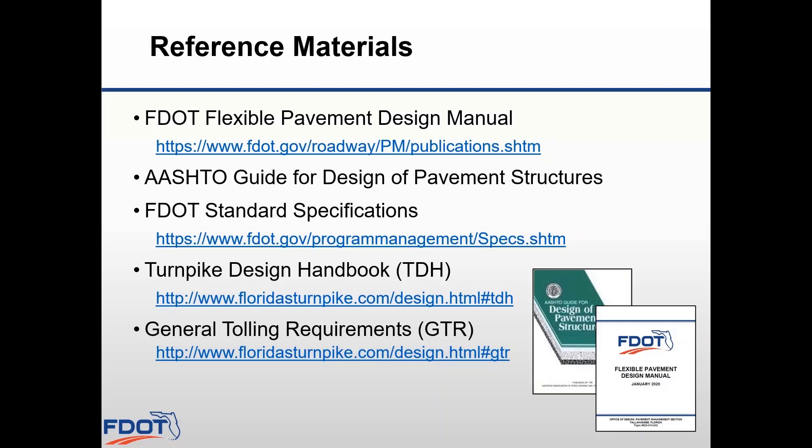Let's look at some good reference materials — the main documents you'll probably use during the pavement design process. We've already shown you the Flexible Pavement Design Manual. The design equation used in our manual comes from the 1993 AASHTO Guide for the Design of Pavement Structures, which is why you may hear our design method called the AASHTO 93 method. The FDOT Standard Specifications for Road and Bridge Construction is also important to be familiar with, including considerations like lift thickness.